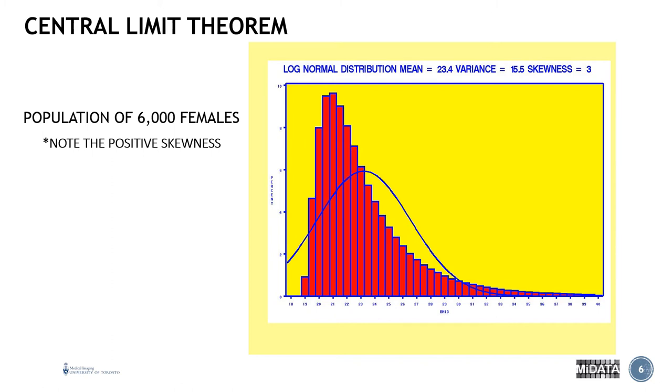And a log normal distribution is most applicable to a positive skew in the data. In this case, the mean is 23.4 with a variance of 15.5. The variance is an indicator of the spread of the data. The larger the variance, the larger the spread of the data.